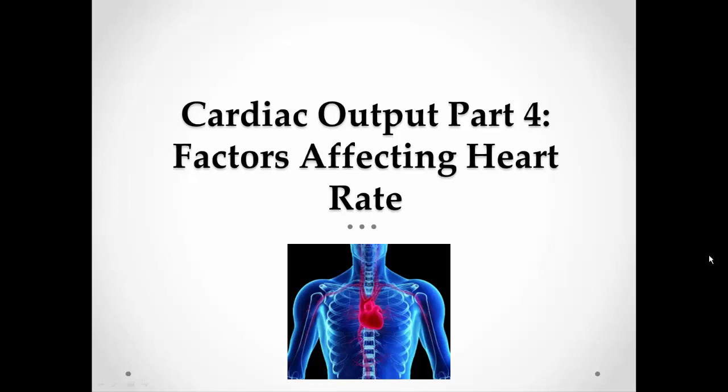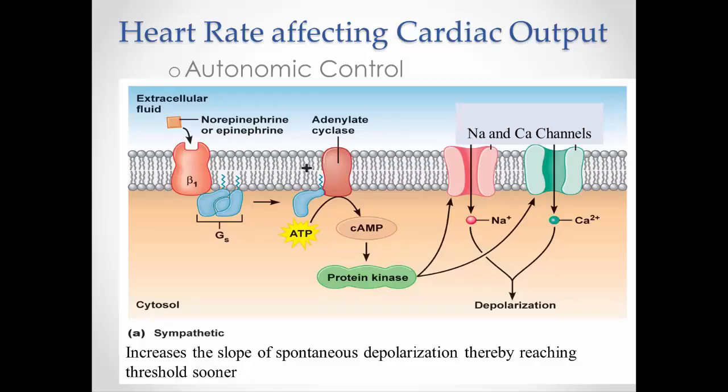Now we're going to examine the effects of heart rate and cardiac output and how we can affect heart rate. If I can alter heart rate, I can then affect cardiac output. So how can I change heart rate? I can do it with the nervous system, particularly the autonomic nervous system, and either through sympathetic or parasympathetic impulses. Now we're ready to look at the actual mechanism involved in altering heart rate.